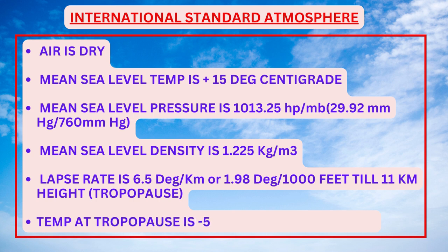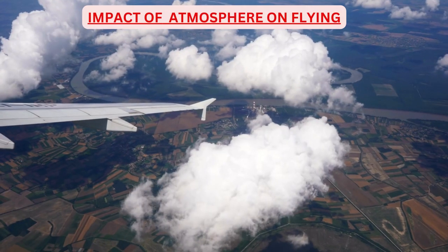Lapse rate in the atmosphere is 6.5 degrees per km or 1.98 degrees per 1000 feet, up to 11 km which is the height of tropopause. Temperature at tropopause is minus 56.5 degrees Celsius and remains constant up to a height of 20 km.